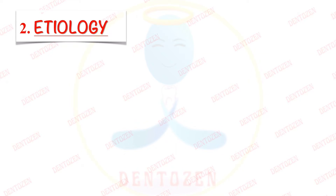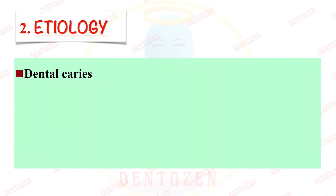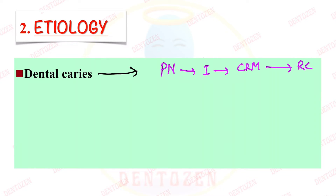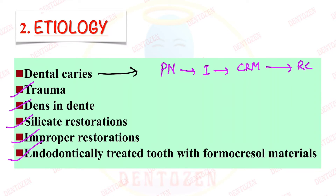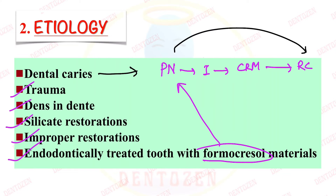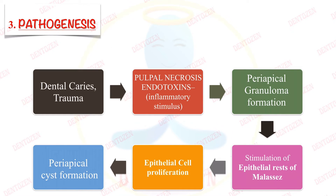The second important thing is etiology — what is the main cause of radicular cysts, and that is dental caries. Dental caries leads to pulpal necrosis, which provides an inflammatory stimulus, because of which cell rests of Malassez in the periodontal ligament get stimulated and they form radicular cysts. Other causes leading to pulpal necrosis include trauma, dens in dente, silicate restorations, improper restorations, and endodontically treated teeth with formocresol materials.